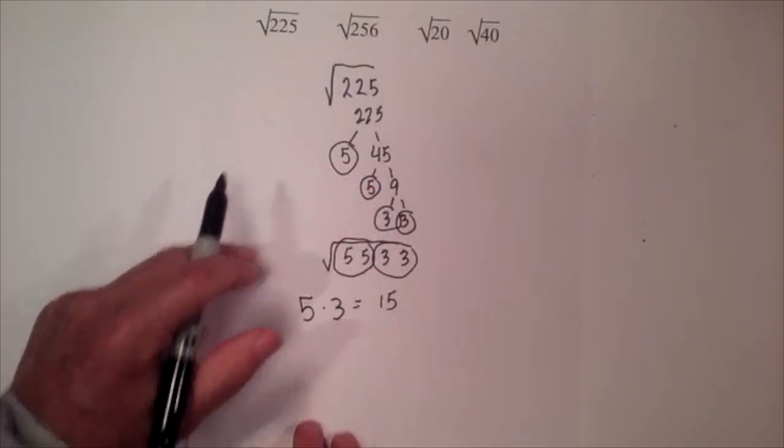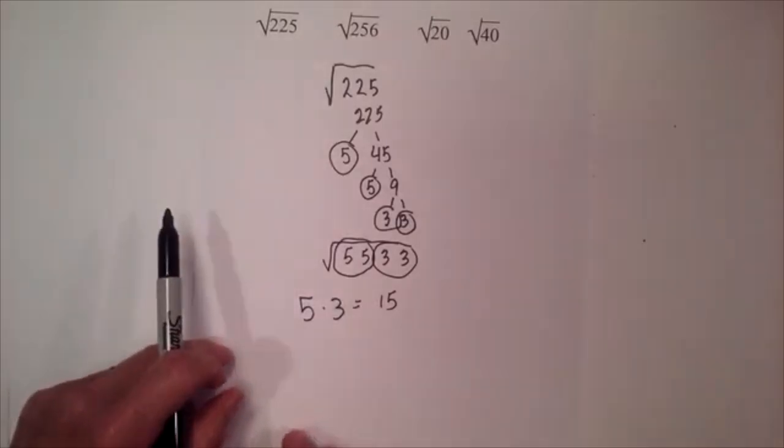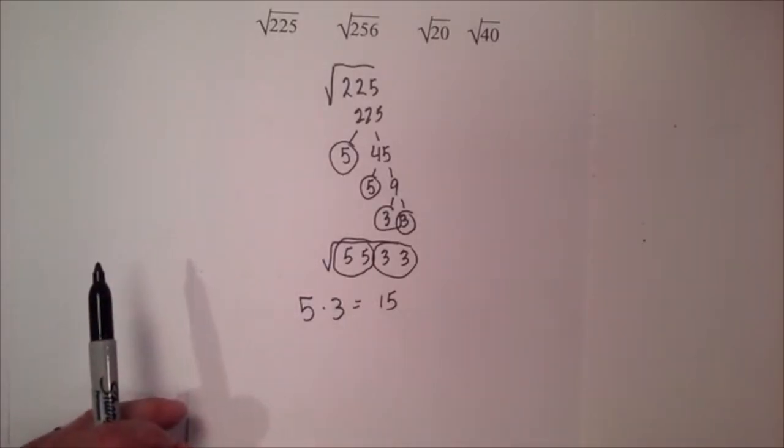So the square root of 225 is 15, and you can see you can use a factor tree to do that. Now let's work on 256.